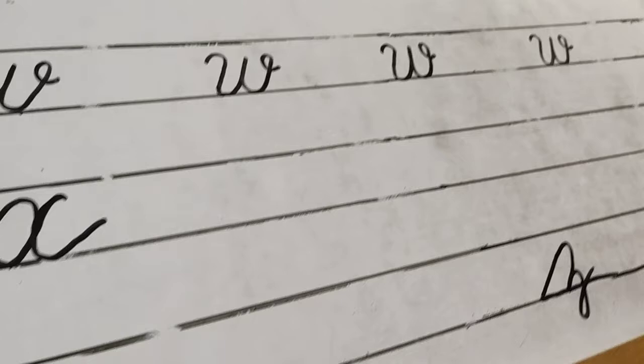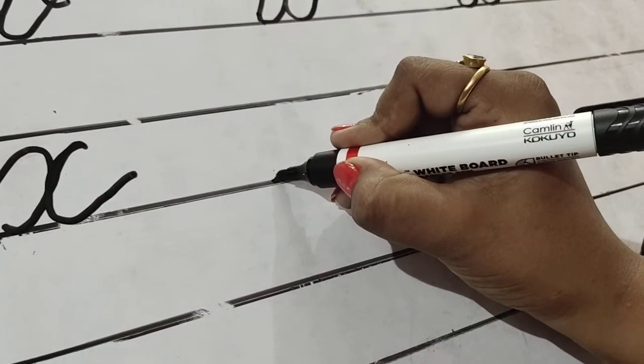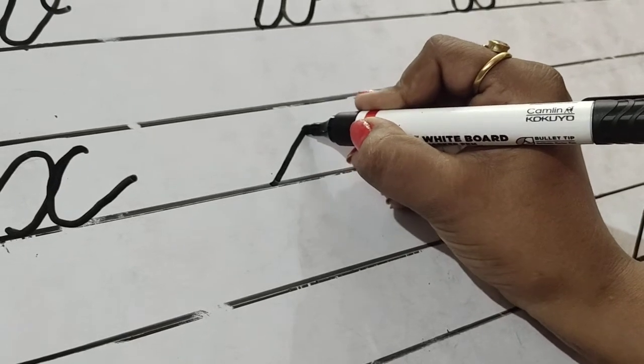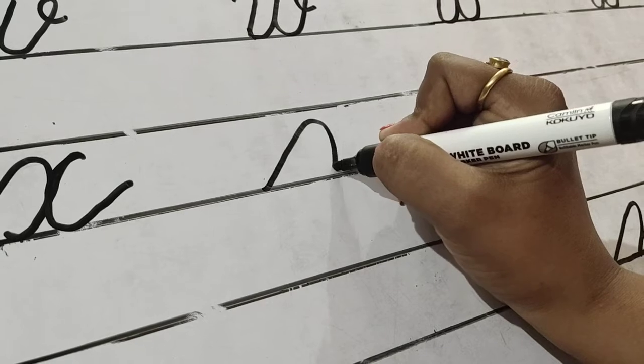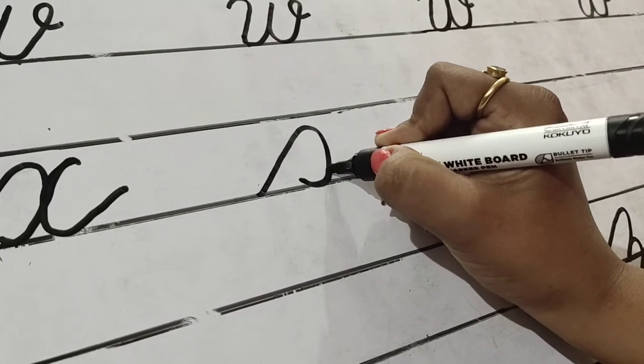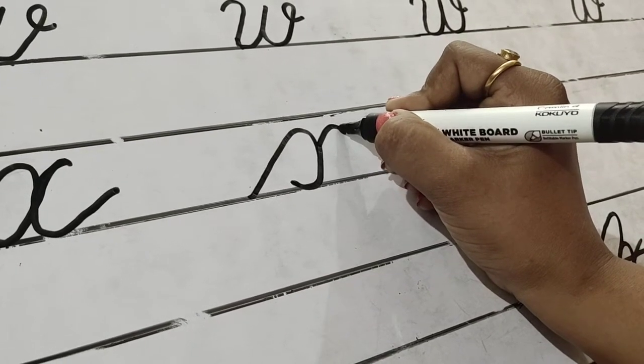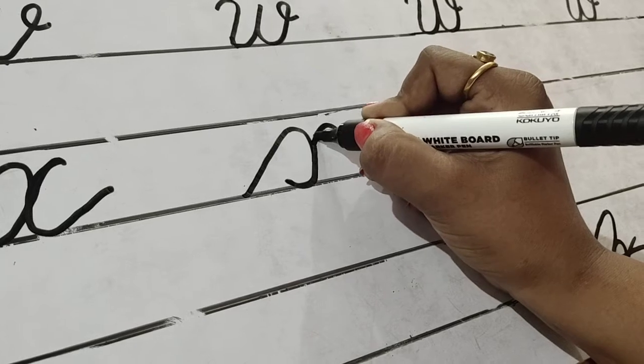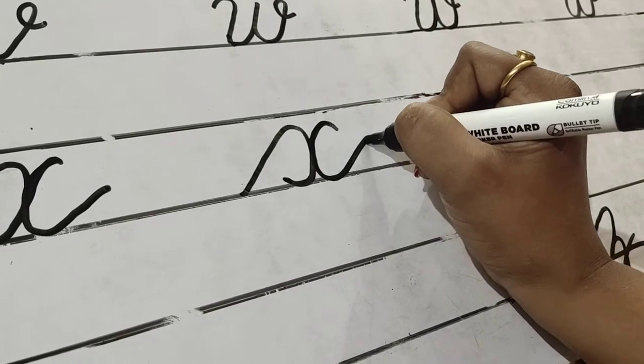Now see how to make X. Lower line ko touch karete hain. Humne slanting line bana ke upar ja rahe hain. Yahan se curve shape dete hain. Reverse C bana rahe hain. Reverse C ki body par vaapis chalte hain, upar jayenge, yahan se out hongi. Ab yahan se hum vaapis aayenge, isko touch karete hain center line se, aur aise jate hain C banaake, thoda upar le jayenge.